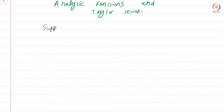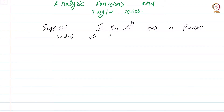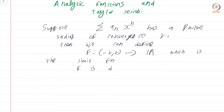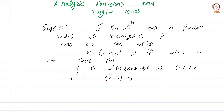Suppose summation aₙxⁿ has a positive radius of convergence r. Then we can define f from (-r, r) to the real numbers, which is the limit function. What we have established in the last module is that f is differentiable on (-r, r). Not only that, f prime is given by the series summation n·aₙ·x^(n−1), n equals 1 to infinity.